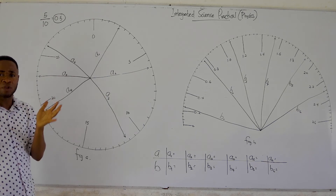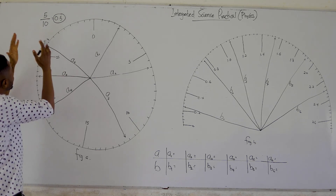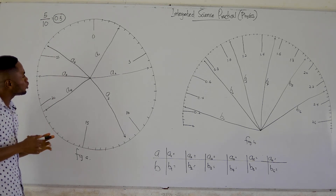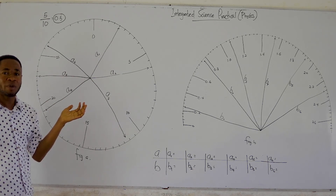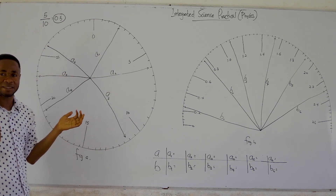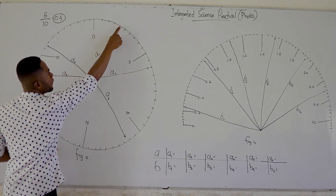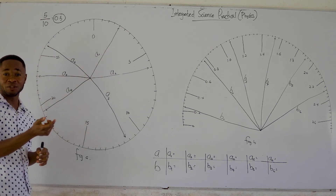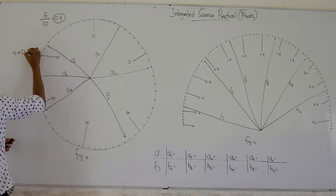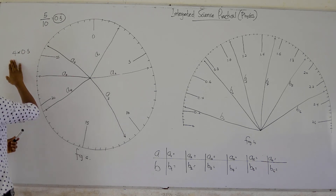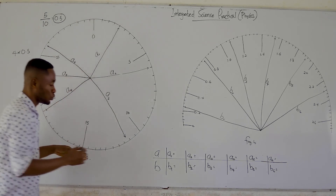Keep that 0.5 somewhere safe because it's going to be very important to us. If you are asked to read a1, you just count the number of graduations from zero — remember the zero mark itself is not counted. So we count: one, two, three, four. A1 is on the fourth graduation. Take that four and multiply it by 0.5 — four times 0.5 gives us two. So a1 equals two.